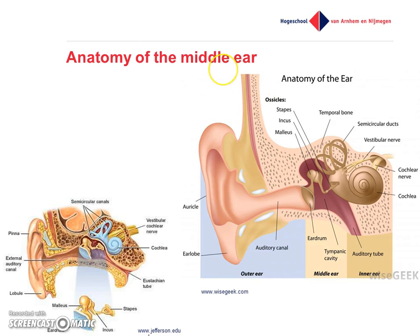Those three important structures are the ossicles: the stapes, the incus, and the malleus — three tiny little bones inside your middle ear. At the right side of this picture you see the inner ear, including the cochlea and the semicircular ducts.